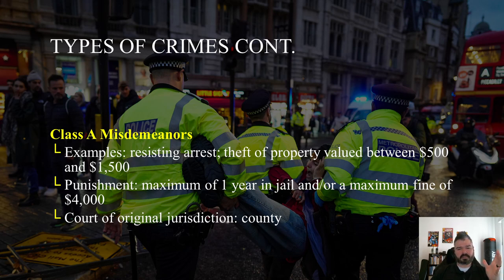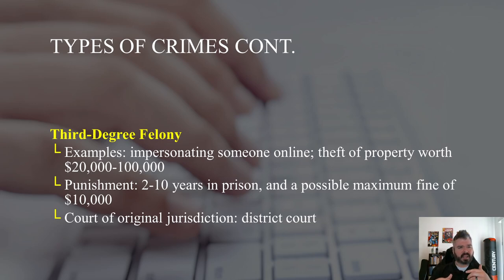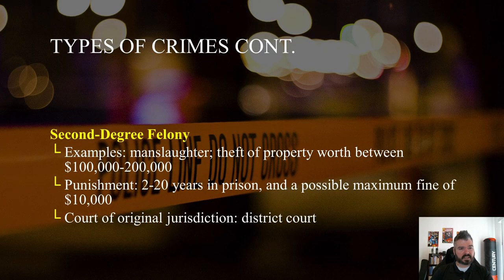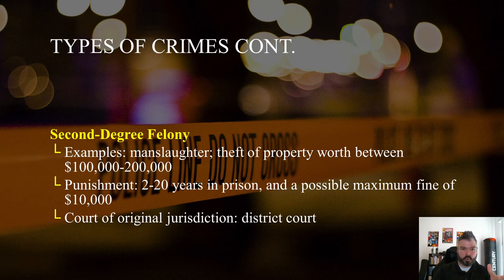Now let's dive into felonies, because we're going to see a similar pattern. A third-degree felony includes impersonating someone online and theft of property worth between $20,000 to $100,000. The punishment is 2 to 10 years in prison and a possible maximum fine of $10,000. The court of original jurisdiction is the district court. Second-degree felonies include manslaughter and theft of property worth between $100,000 to $200,000. The punishment ranges from 2 to 20 years in prison and a possible maximum fine of $10,000. Again, the court of original jurisdiction is the district court.